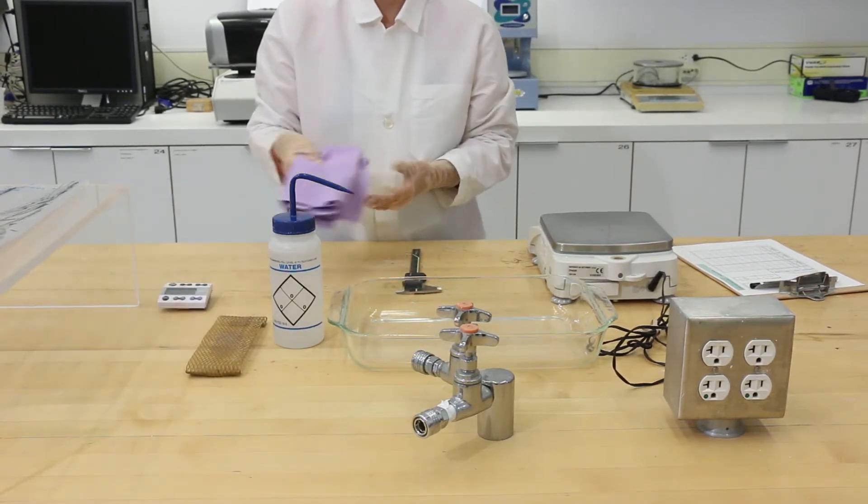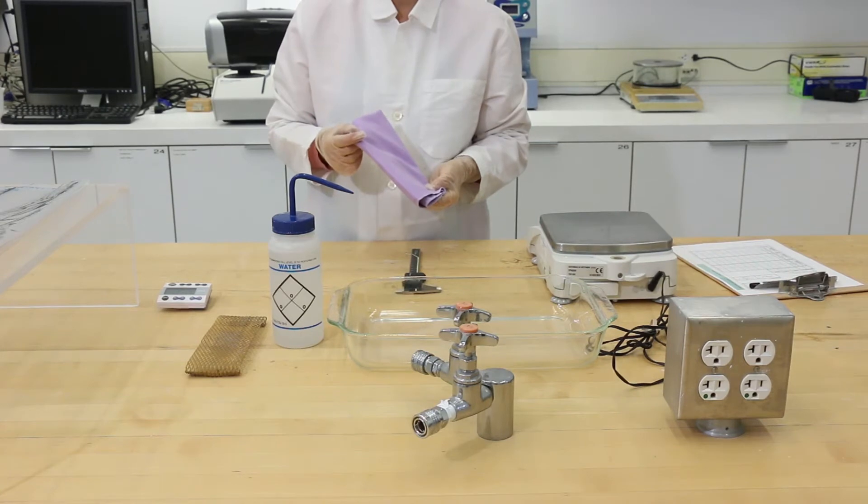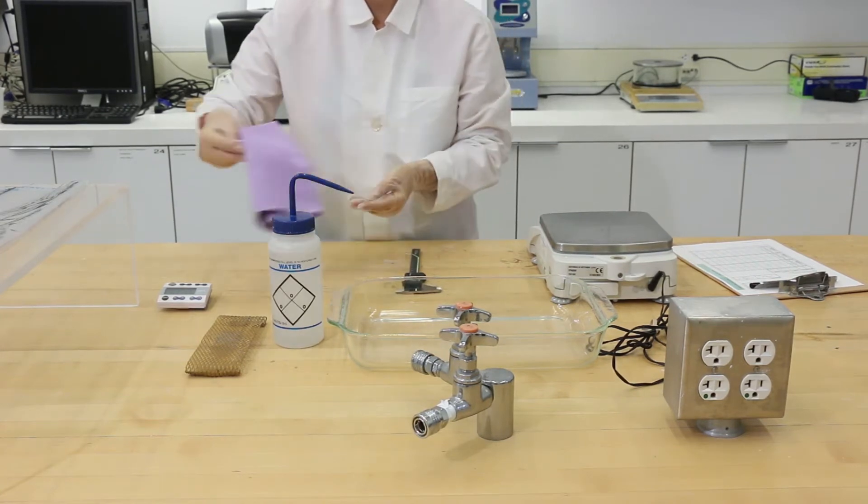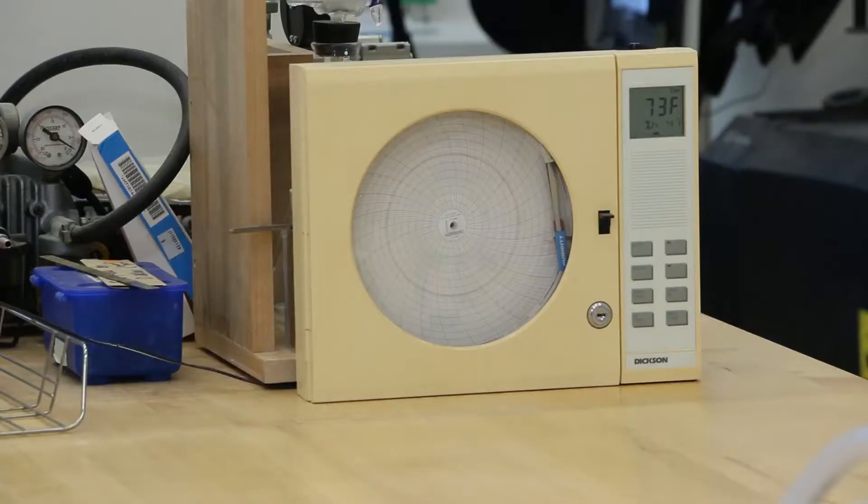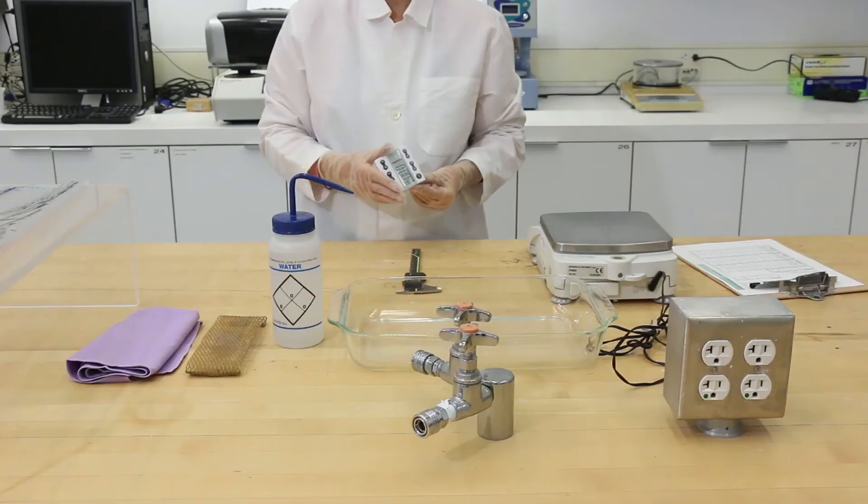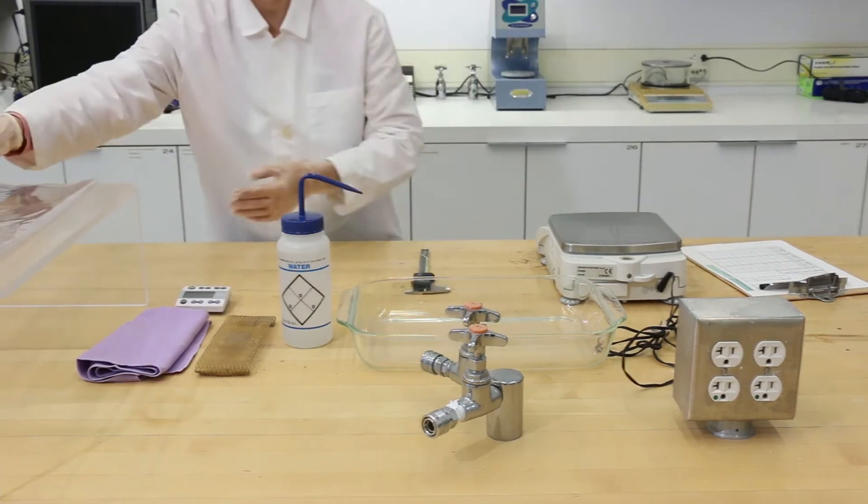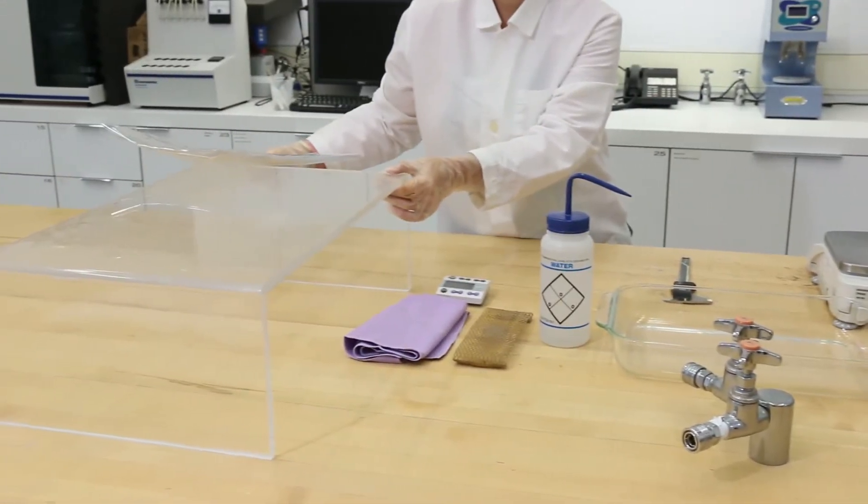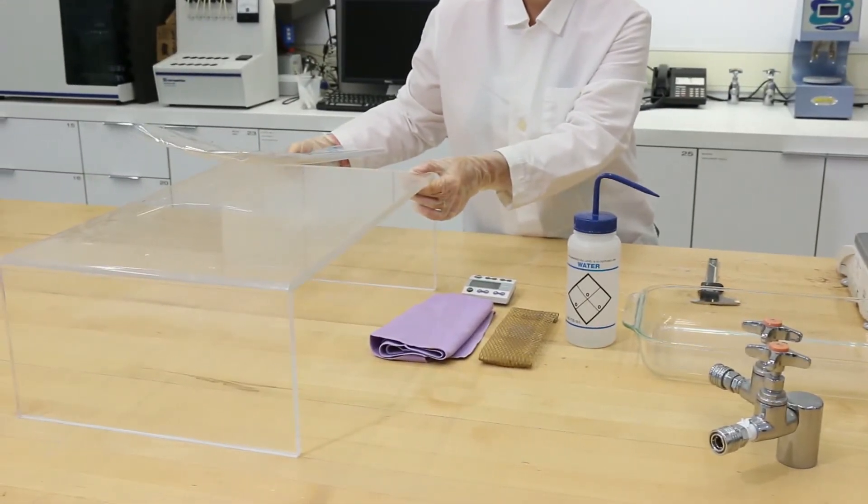Lint-free cloth, a thermometer and relative humidity meter accurate to within 1 degree centigrade and 1 percent respectively, stopwatch, and a transparent plastic box large enough to provide cover over the water-filled tray and the upright specimen.